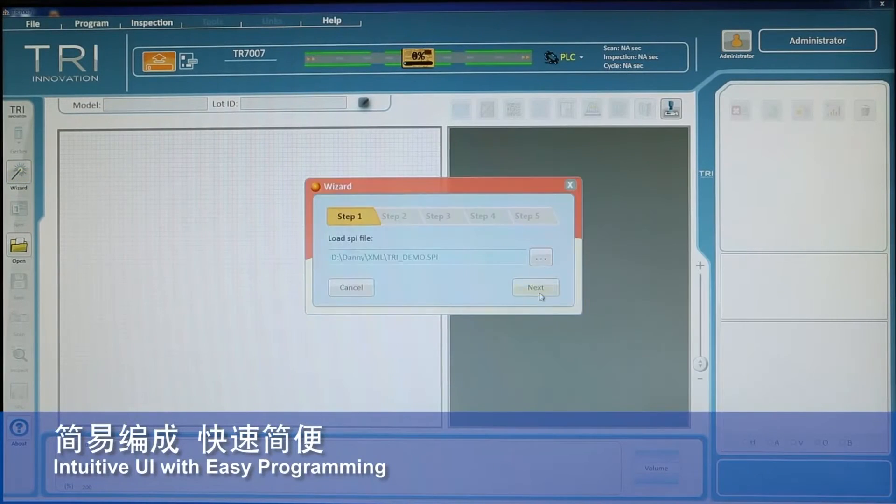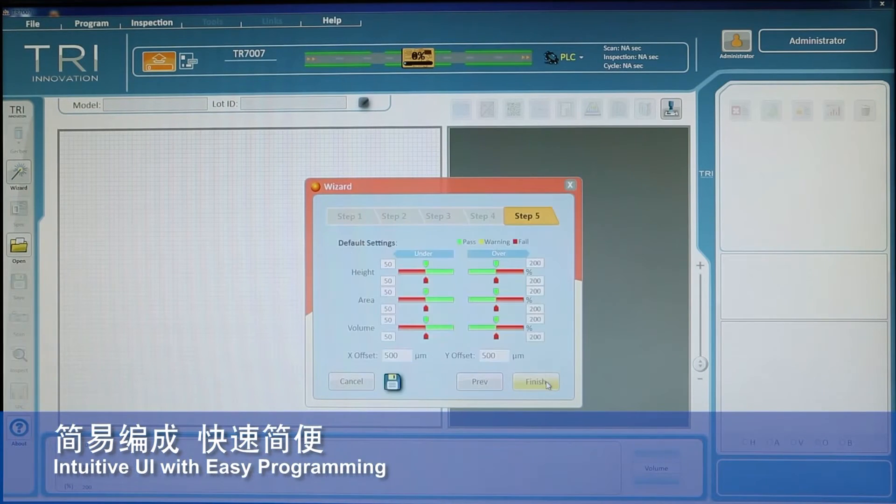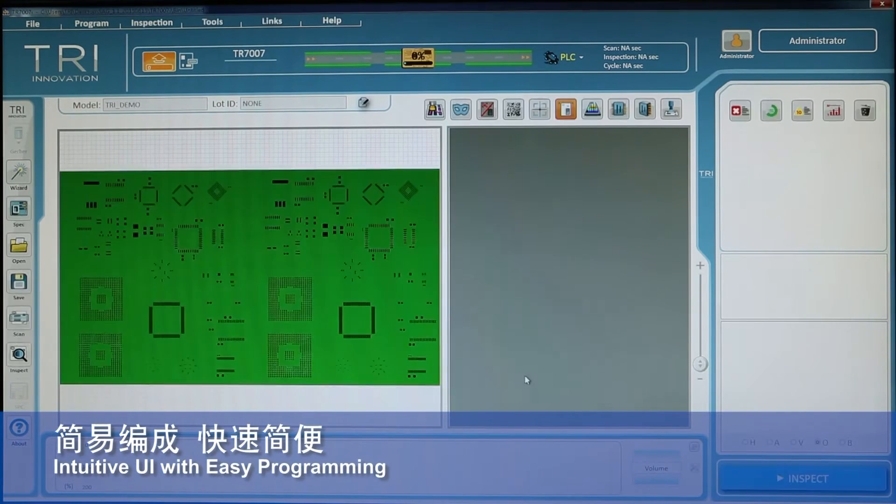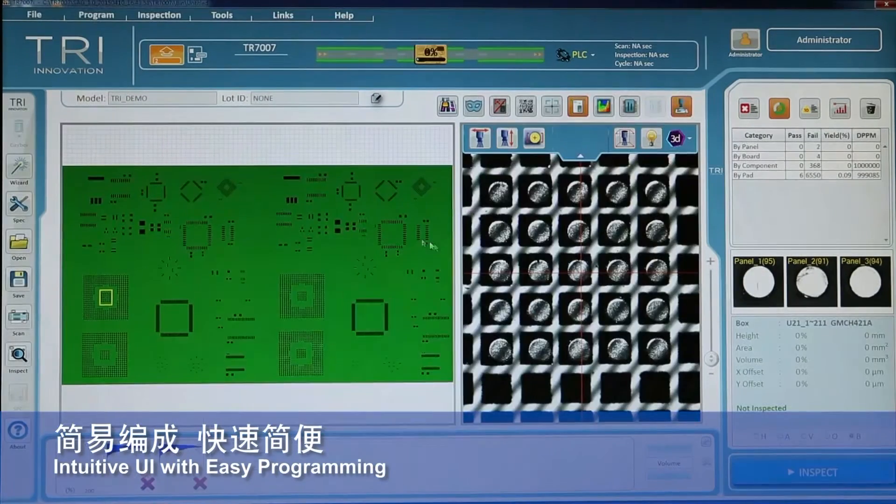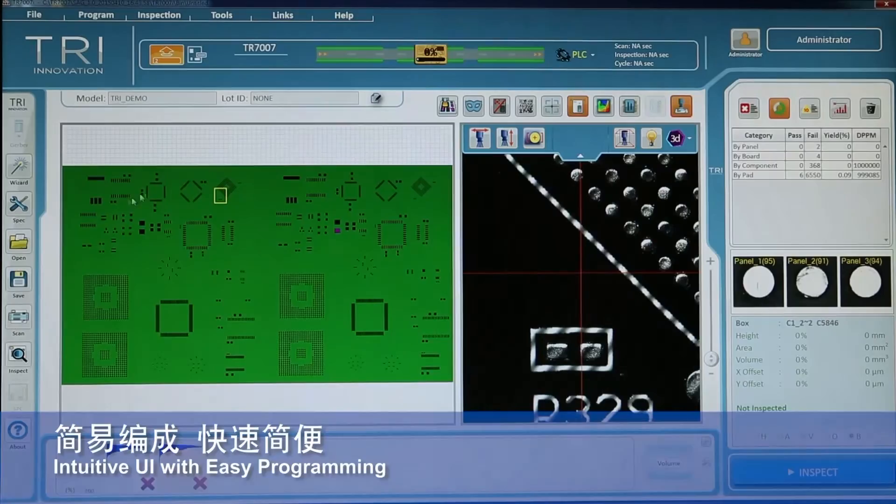TRI's SPI systems come with a quick and intuitive user interface that offers fast programming and easy operation, helping to maximize inspection efficiency while minimizing personnel cost.